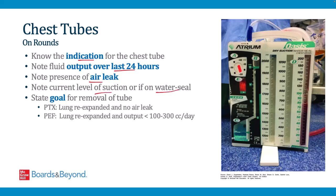When discussing a patient with a chest tube on rounds, note the indication, fluid output over the last 24 hours, and the presence of any air leak — identified by bubbling in the water seal chamber, indicating air escaping from the system or ongoing air in the pleural space. Note the current level of suction or if the patient is on water seal. State the goal for tube removal: for pneumothorax, confirm lung re-expansion and no ongoing air leak; for pleural effusions, confirm lung re-expansion and drainage output less than 100–300 cc per day.